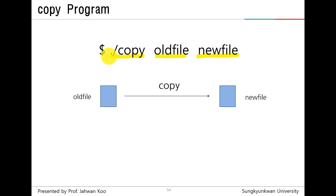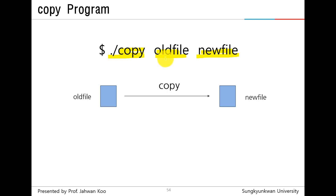Again, in the command line interface, you can enter ./copy oldfile newfile like this. In this line, copy is the command, oldfile is the first argument, and newfile is the second argument. So we have one command and two arguments. As you can guess, we need the command line argument handling code in your program.